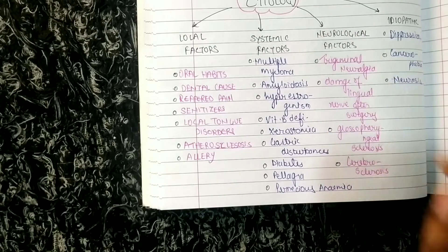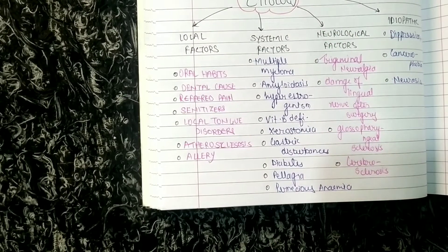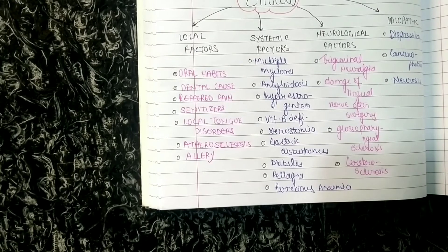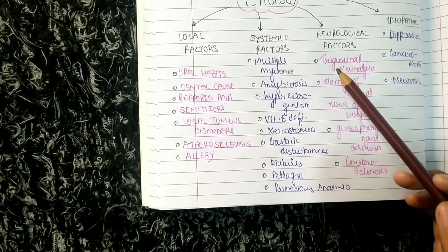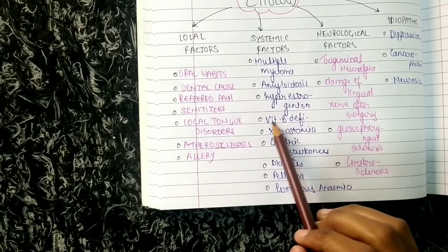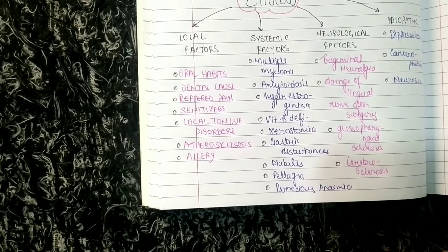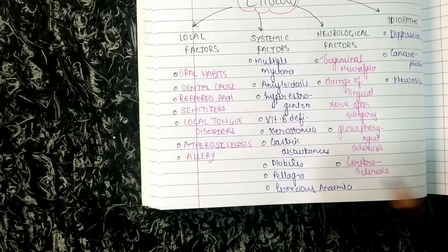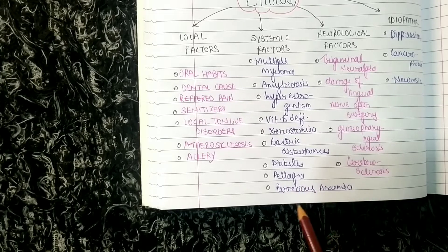Coming to systemic factors, there are multiple diseases in which glossodynia can be a symptom. These include multiple myeloma, amyloidosis, hyper-estrogenism, vitamin B deficiencies, xerostomia, gastric disturbances such as acidity, diabetes, pellagra, and pernicious anemia.